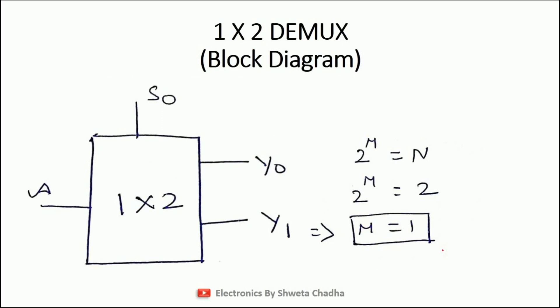Let us discuss the first type: the basic 1×2 demultiplexer. Make sure you concentrate on this: if the number of input signals is 1, that is a demultiplexer; if the number of output signals is 1, that is a multiplexer. The block diagram shows 1 input signal A and 2 output signals Y0, Y1. Using the formula 2^M = N, the number of select lines comes out to be 1, so S0 is the only select line.